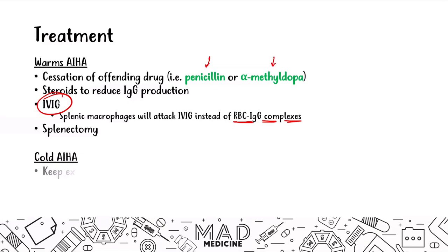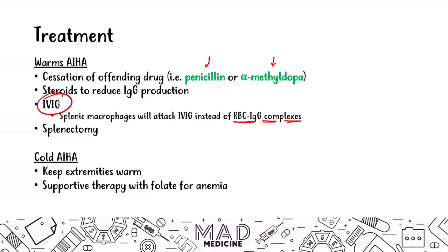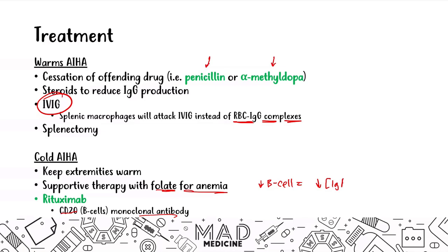For cold autoimmune hemolytic anemia: keep the extremities warm, since that's where hemolysis preferentially occurs. Provide supportive therapy with folate for the anemia. You can also give rituximab, a CD20 monoclonal antibody that targets B cells, decreasing IgM production — though this increases susceptibility to infections.